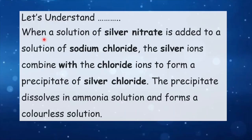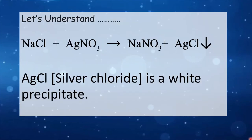When a solution of silver nitrate is added to a solution of sodium chloride, the silver ions combine with the chloride ions to form a precipitate of silver chloride. The precipitate dissolves in ammonia solution and forms a colorless solution. NaCl (sodium chloride) reacts with AgNO3 (silver nitrate) to form NaNO3 (sodium nitrate) and AgCl (silver chloride).